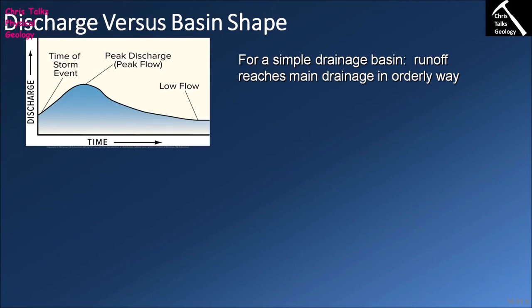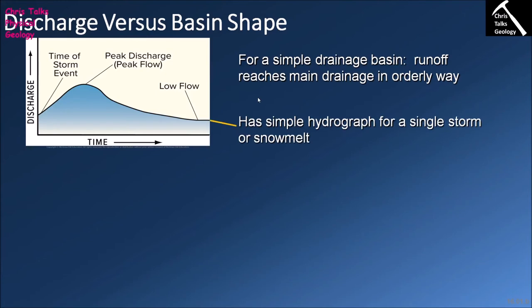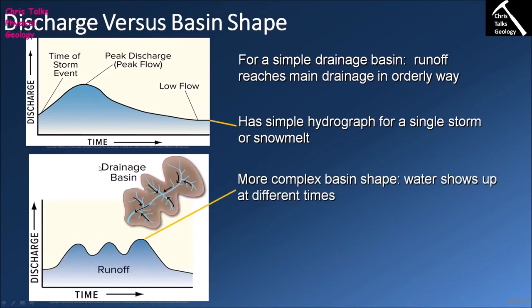The shape of the drainage basin affects the hydrograph we see. For a relatively simple river system, rain falls, there's a lag between the rain falling and entering the river, discharge increases, peak discharge is achieved, and then discharge drops back down. You would expect this simple hydrograph where you have a river with one channel and several tributaries entering it providing water to the main channel.